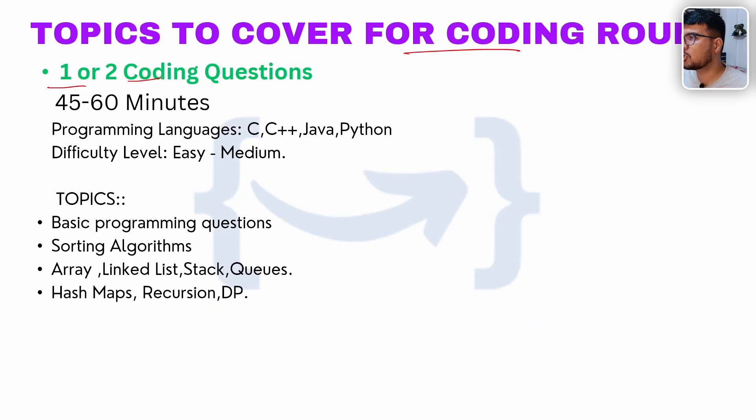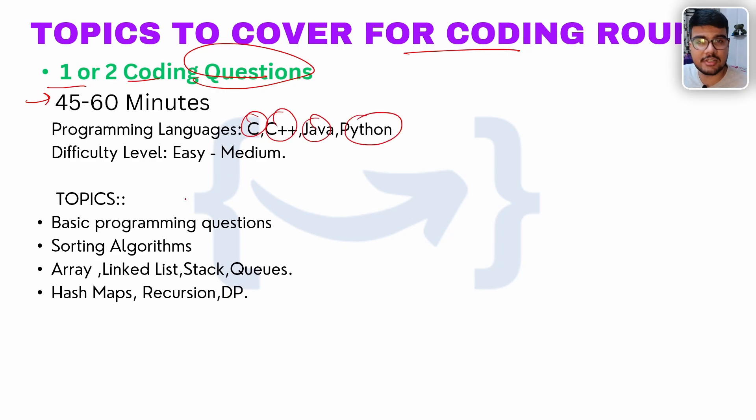Topics to cover for the coding round: there will be one or two coding questions, with 45 to 60 minutes given. You can code in C, C++, Java, or Python.